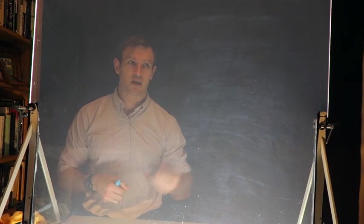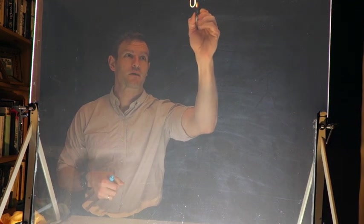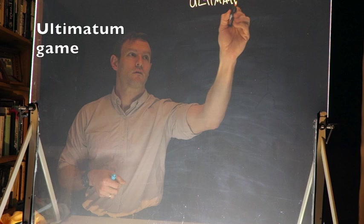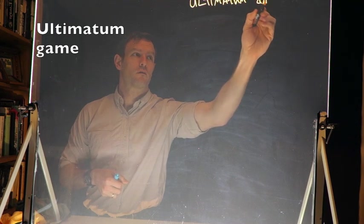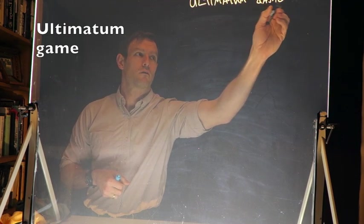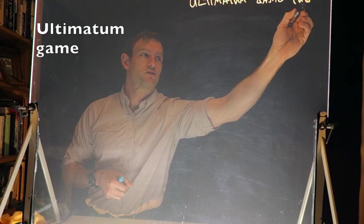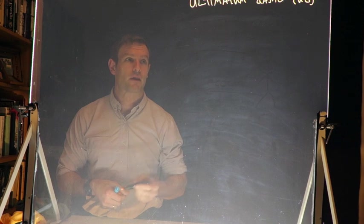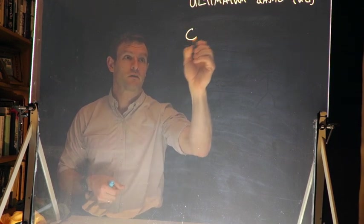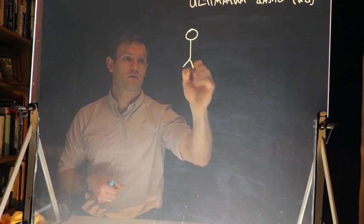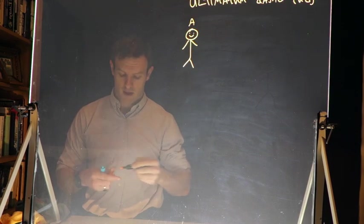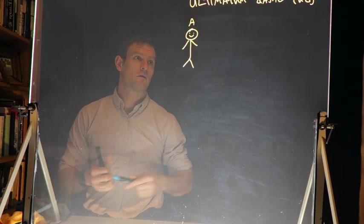So I want to talk about the ultimatum game, or UG. In the ultimatum game there are two players, and we're going to call them player A and player B.